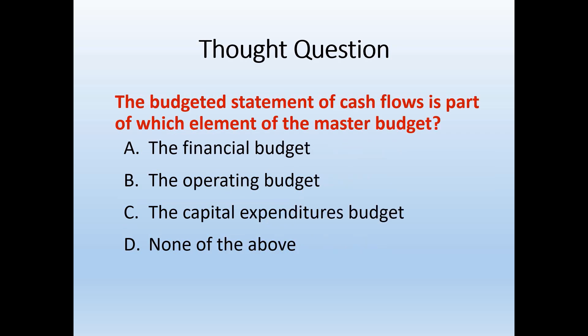Here's another question: the budgeted statement of cash flows is part of which element in the master budget? Yes — the budgeted statement of cash flows is an outcome budget; it's part of the financial budgets in the master budget.